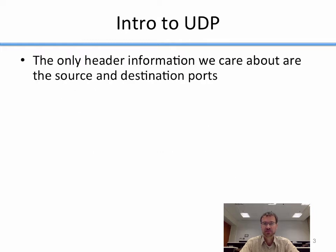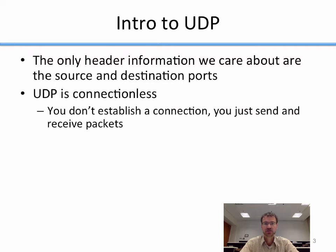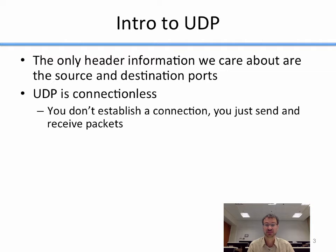The only header information for UDP that we actually care about are the source and destination ports. The other two fields it provides are length and checksum, and we're not worried about those right now. UDP is connectionless, which means you never establish a connection. In TCP, you establish a connection before you send and receive data. In UDP, you never establish a connection — you just send and receive packets.